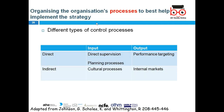First of all, if you don't make a plan right, you can't implement it properly — planning is very important. At the implementation stage, you need to understand the ground reality. Some techniques we can use: organizing the organization's processes to best help implement the strategy. Different types of control processes: direct supervision, output performance targets.